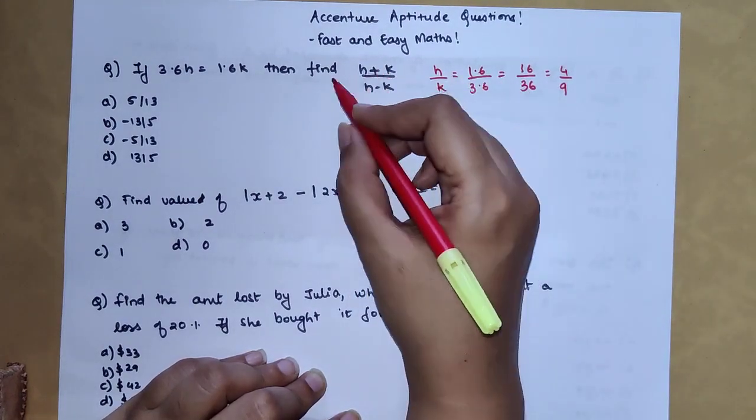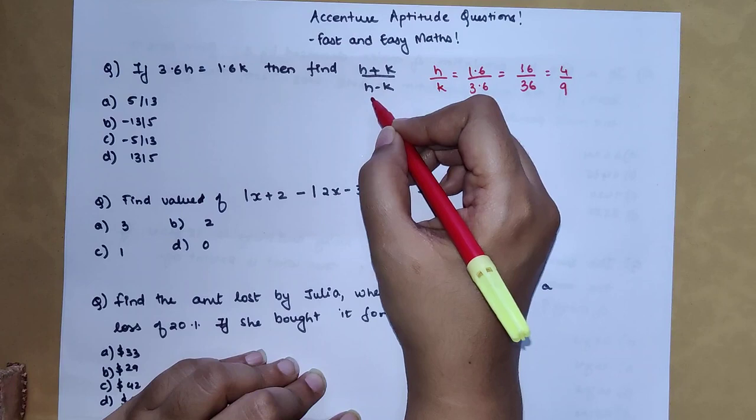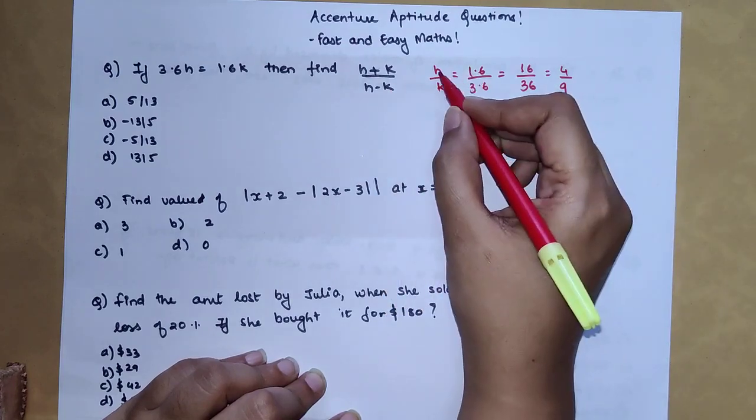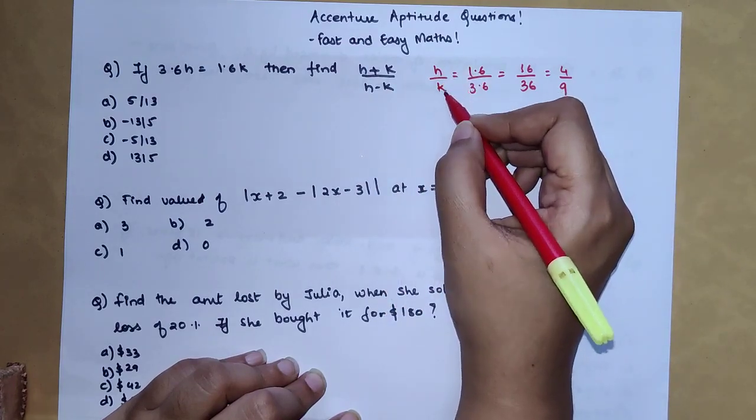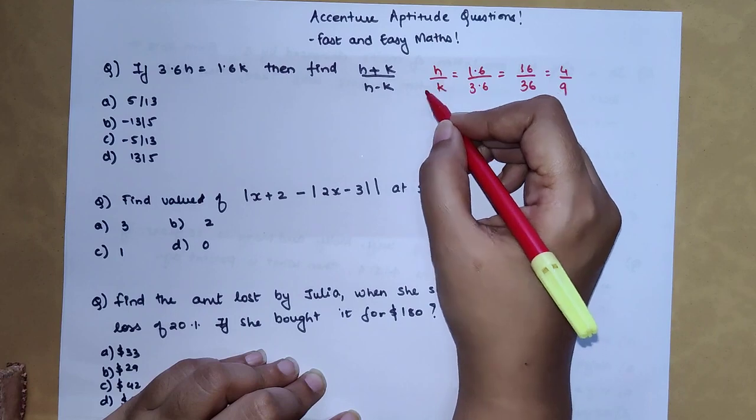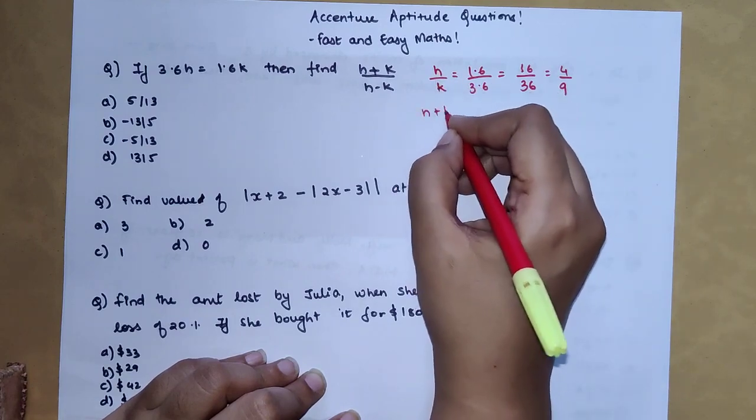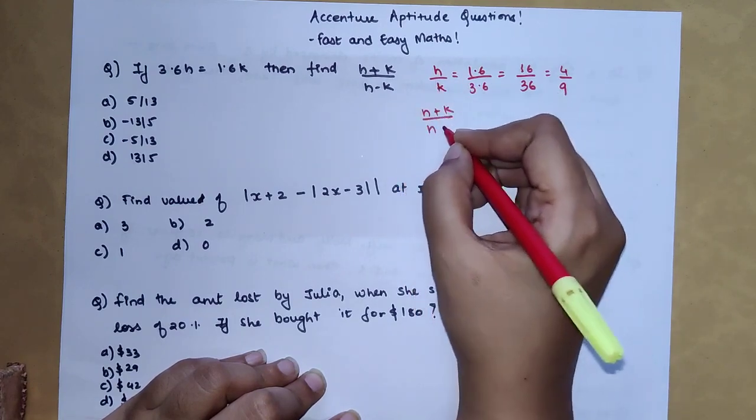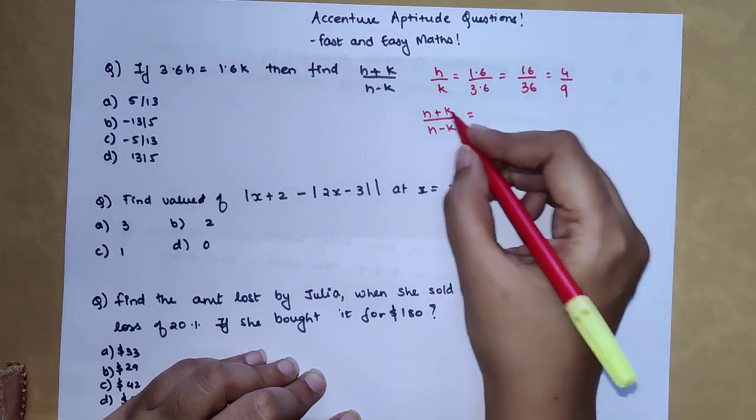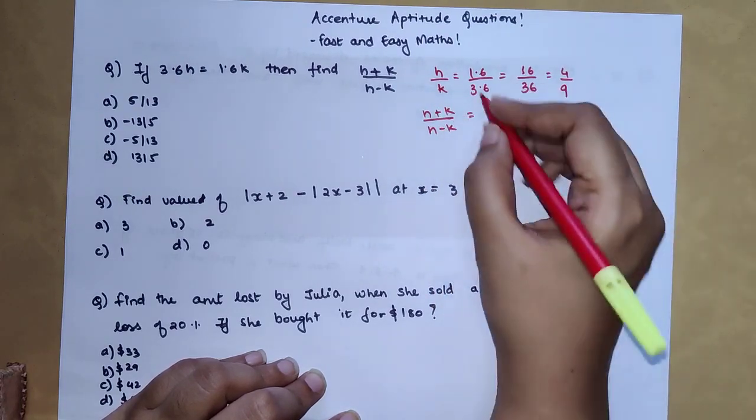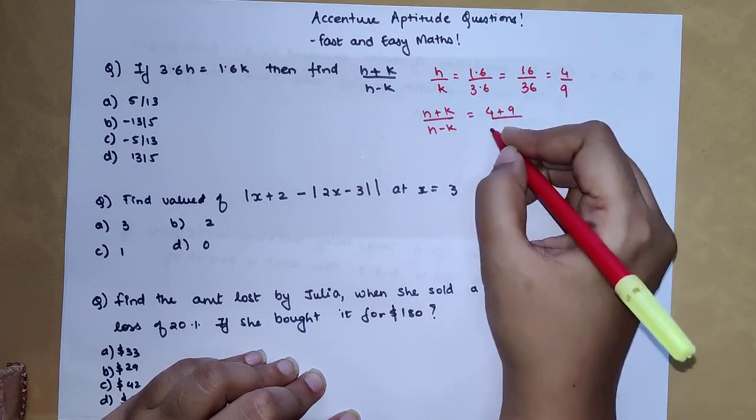Now understand when you have something like (h+k)/(h-k), this looks basically like numerator plus denominator and then numerator minus denominator. When you have something like this, you just have to do whatever operations you're carrying here, you can do it over here as well. So 4 plus 9 upon 4 minus 9.